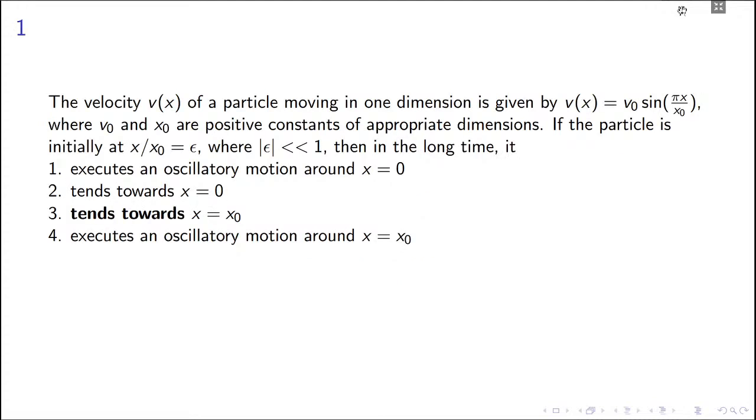This is the problem from Part C. It says the velocity of a particle moving in one dimension is given by v(x) = v₀ sin(πx/x₀), where v₀ and x₀ are positive constants. The initial condition is x equal to ε times x₀, where mod of ε is much smaller than 1. Then in the long time, which option is right?